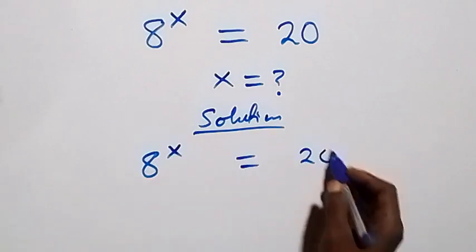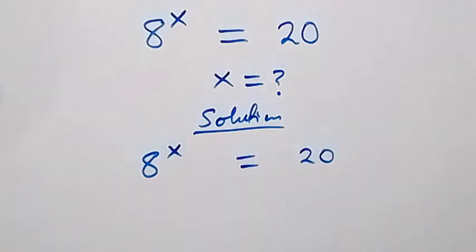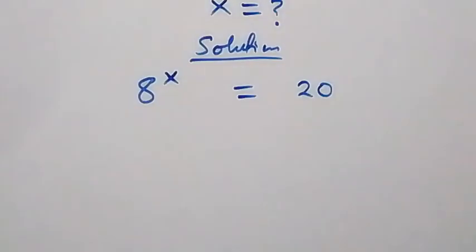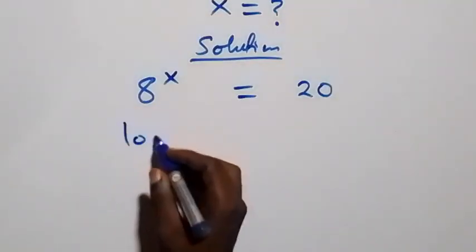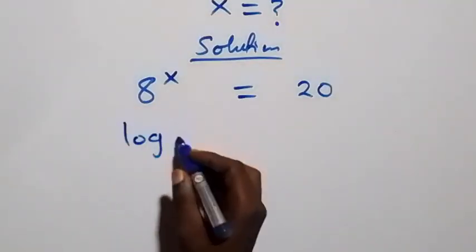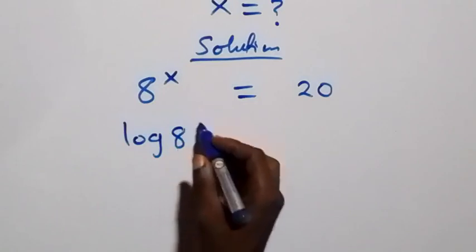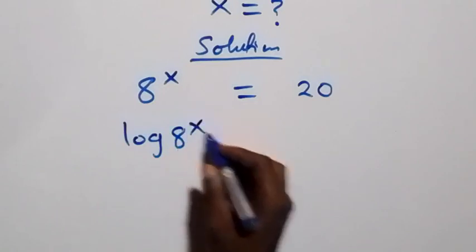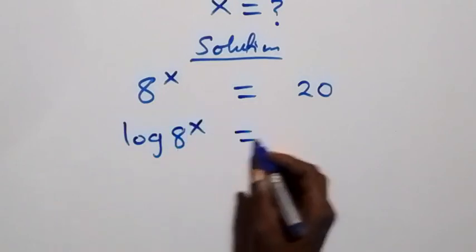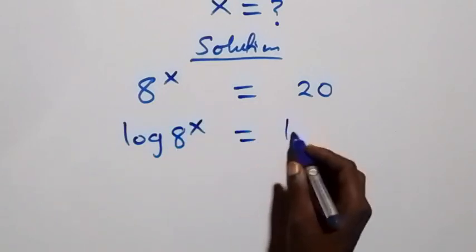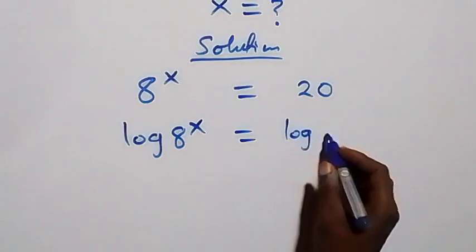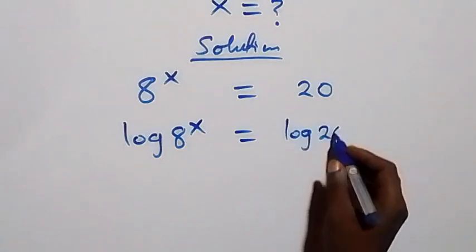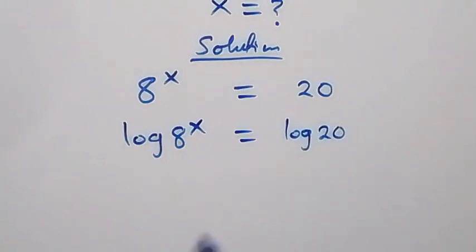Here we take the log on both sides, that is we have log of 8 raised to power x equals to log 20 on the other side.